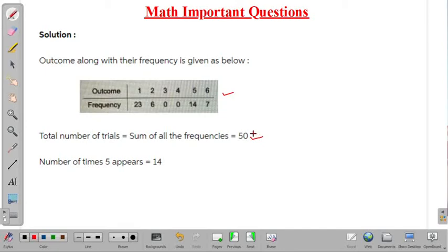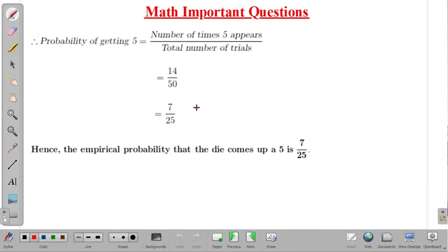And if you see, number of times 5 is coming, so it is 14. That is, frequency of 5 is 14, right? And we can calculate the probability of getting 5 as number of times 5 appears divided by total number of trials. So number of times 5 appears is 14 and total number of trials is 50. So after simplification we will get this as 7 by 25.